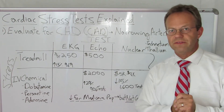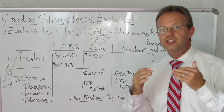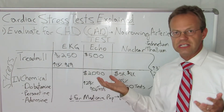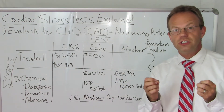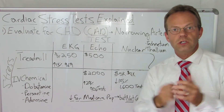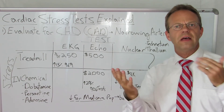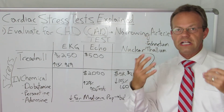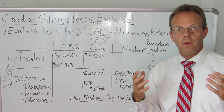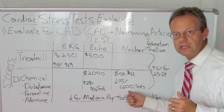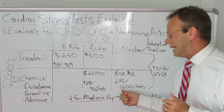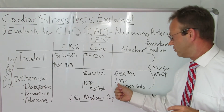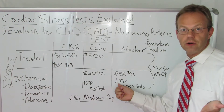Looking at the frequencies of these tests for the population aged 25 to 64, the overall rates went up 3% during the study period from 2005 to 2012. The most common was the nuclear stress test at 1,600 tests in the sample, though that number had gone down by 15% over that seven-year period.